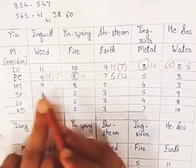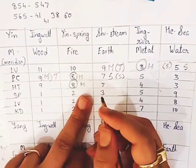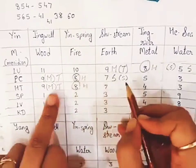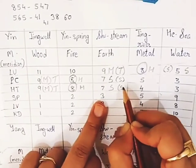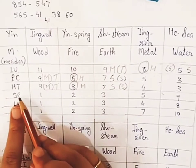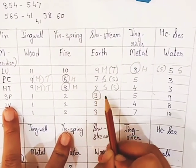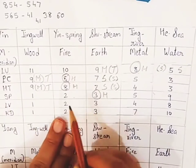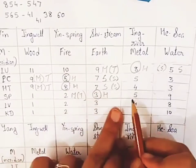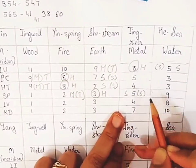Similarly, heart meridian — heart is also a fire element. So heart 8 is the horary point, the self point of the heart meridian. Heart 9 is the mother point or tonification point, and heart 7 is the son point or sedation point. Now comes the spleen meridian — spleen is earth element. The earth point of the spleen meridian is spleen 3, so spleen 3 is the horary point. Spleen 2 is the previous one and becomes the mother point and tonification point. Spleen 5 is next to the horary point, so it is the son point and sedation point.